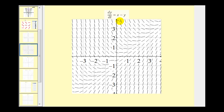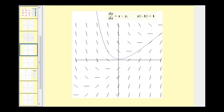For example, if we were given additional information — such as the solution containing the point (-1, 1), meaning y of negative one equals one — then this would be the only solution to this differential equation. This function would be called the particular solution to this differential equation.